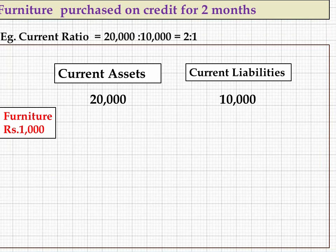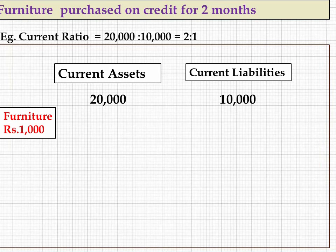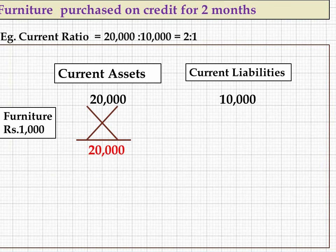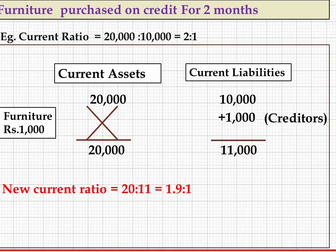Suppose furniture is purchased on credit for 2 months — what is the effect on current ratio? With current assets 20,000 and current liabilities 10,000 (2:1), buying furniture for 1,000 rupees on credit does not affect current assets (furniture is non-current). However, creditors for fixed assets increase by 1,000, making current liabilities 11,000. The new ratio is 20,000 upon 11,000, approximately 1.9:1 — so the current ratio declines.